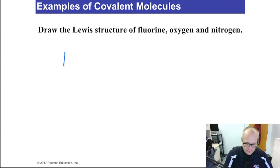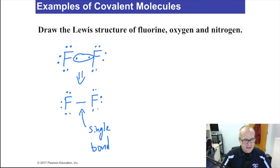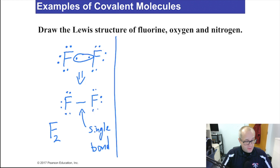We've already done a few of these examples — we'll do them again. Fluorine. And another fluorine. We'll make a covalent bond by mingling these electrons — single bond. Two, four, six, and the bond makes eight. Two, four, six, and the bond makes eight. So there's the Lewis structure of fluorine, and the molecular formula for fluorine is F2.